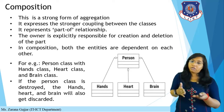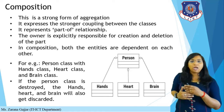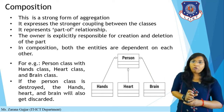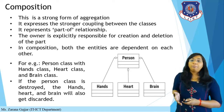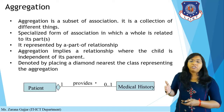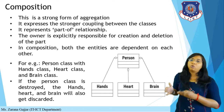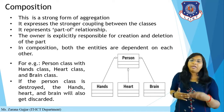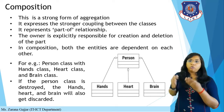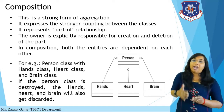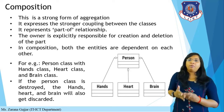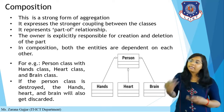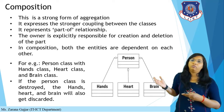Composition is a strong form of aggregation. It expresses stronger coupling between classes. For example, a person has a hand, heart, and brain — all representing a 'part-of' relationship. The owner is explicitly responsible for creation and deletion of a part. If I am the owner of that class, I can easily add any attribute or remove any part.